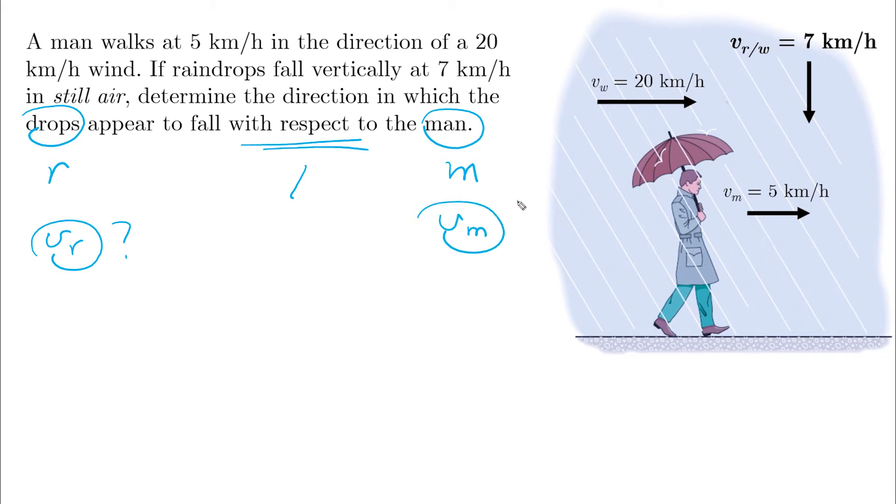Vm is given, so we need to find Vr. And since we have the velocity of the wind, which is 20 km per hour in the i direction, and we also have the velocity of the rain with respect to wind, which is in the minus j direction, then we can use both information to find Vr.